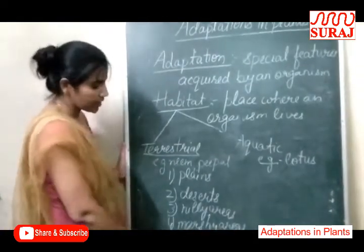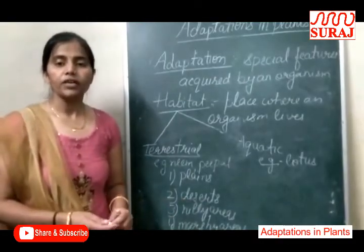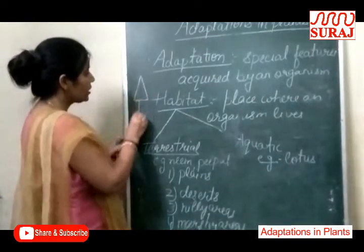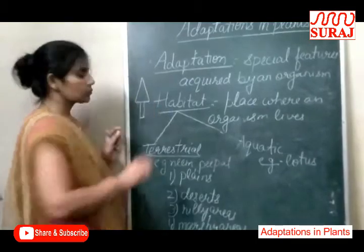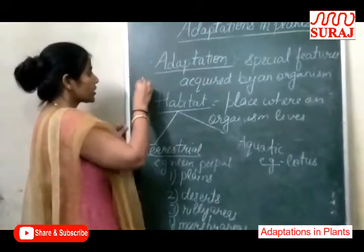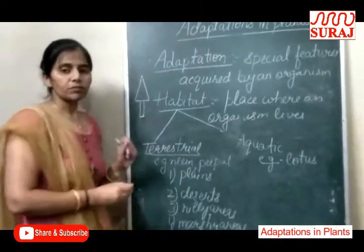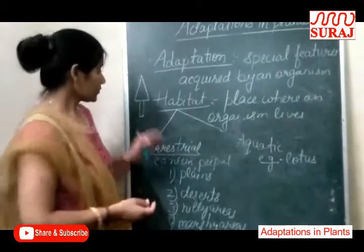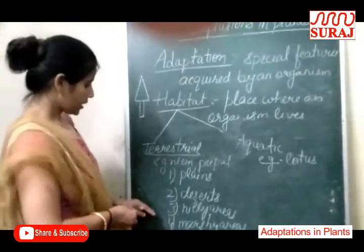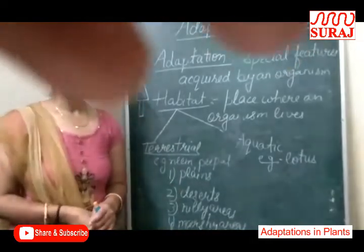Third is Hilly Area plants. Plants that grow in hilly areas have a conical shape — unki shape conical hoti hai, kyunki wahan pe poore saal bhar barf giriti hai. Conical shape is so that when snow falls on them, it slips down to the ground. Leaves are waxy, needle-like and narrow. Examples: Pine, Deodar, etc.